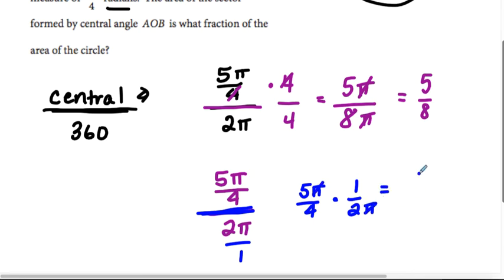And again, the π's would cancel, and you'd get 5/8. So the fraction of the area of the circle is 5/8.